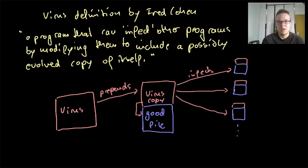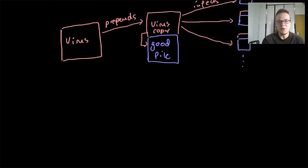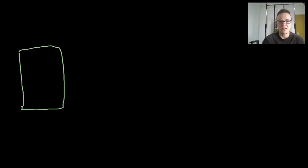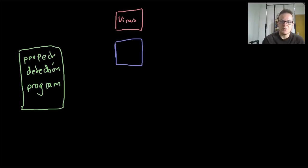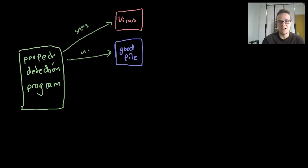His paper will make a proof by stating the opposite. Let's assume there is actually a perfect solution for this — a perfect virus detection program — and then he will contradict this statement, therefore the perfect detection program does not exist. So, let's assume we have a perfect one: we have viruses, we have good files, and the detection program will answer the question, is this a computer virus? In the case of the virus, always say yes; in the case of the good file, always say no, because it's perfect.